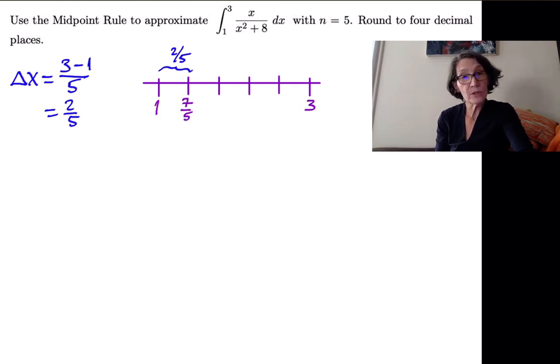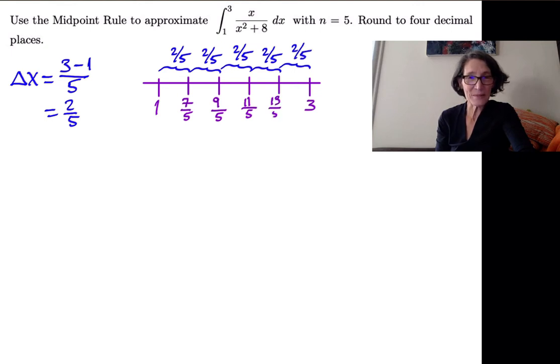Then we keep moving to the right, a width of two-fifths, and the next right endpoint is nine-fifths. The third right endpoint is eleven-fifths. The fourth right endpoint is going to be thirteen-fifths, and then the last one has to be fifteen-fifths, or three.